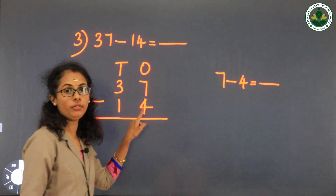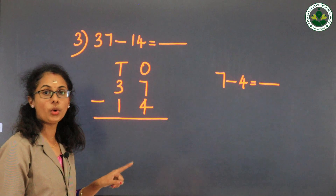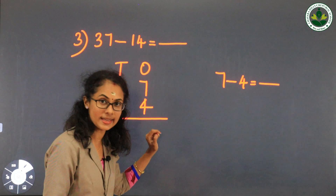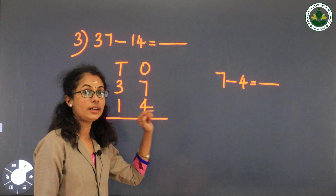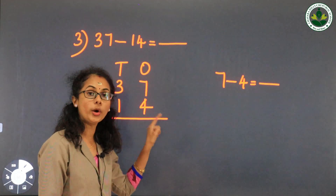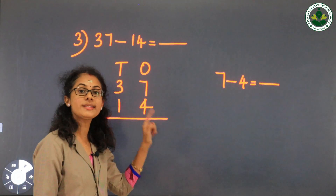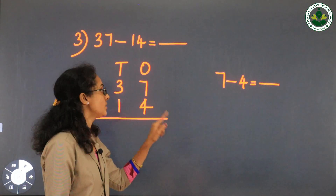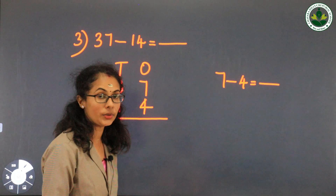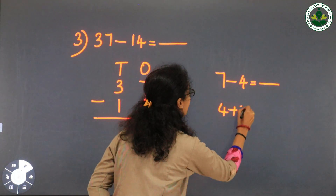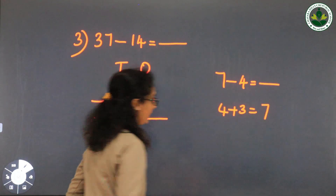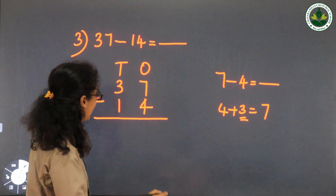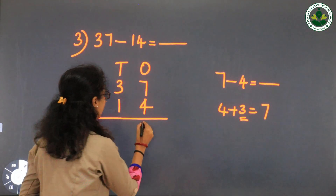Use addition to find the answer: 4 plus 1 equals 5, 4 plus 2 equals 6, 4 plus 3 equals 7. So 7 minus 4 equals 3. Write that 3 in the ones column.